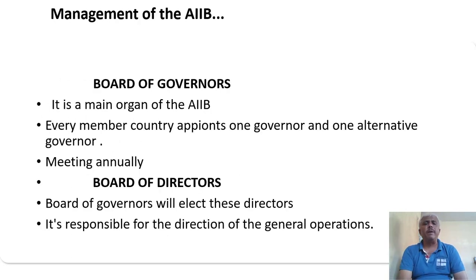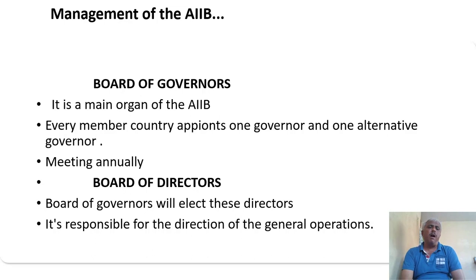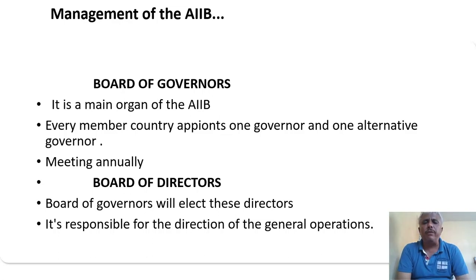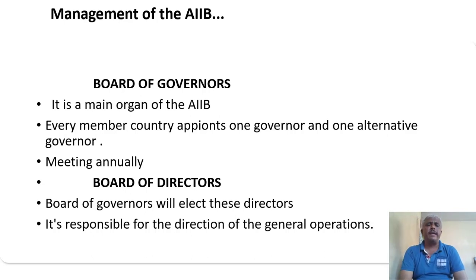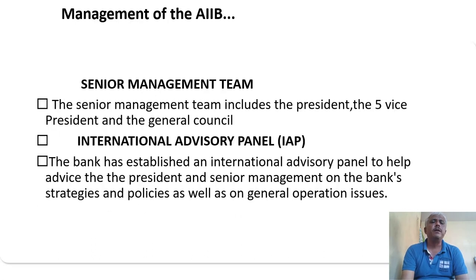The board of governors is the main organ of AIIB. Every member country appoints one governor and one alternative governor. Meetings are conducted annually. The board of governors elects the board of directors, which is responsible for the directions of general operations. The board of directors is equally important in managing AIIB's day-to-day operations.